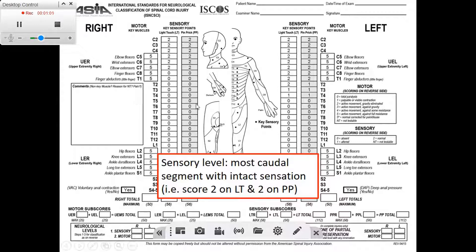Looking at the sheet provided, on the right side we look at the columns for sensation. We have 2, 2, 2, and then we have loss of sensation — same thing for the pin prick. We need to specify the lowest segment where we have 2 on both light touch and pin prick. Looking at the sheet, that's going to be C7, so C7 is our sensory level for the right side.